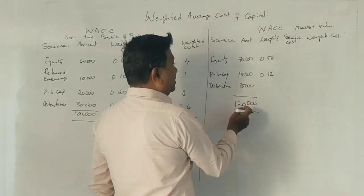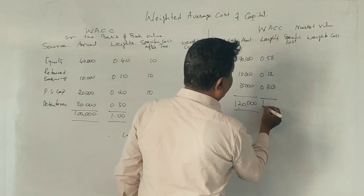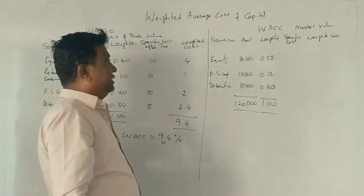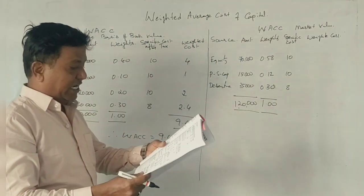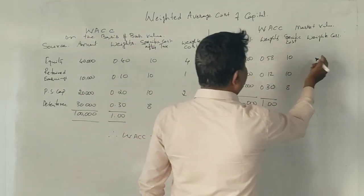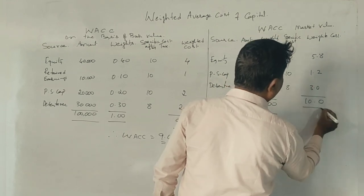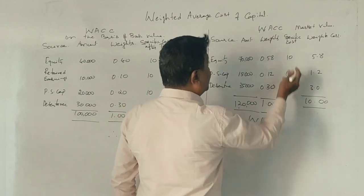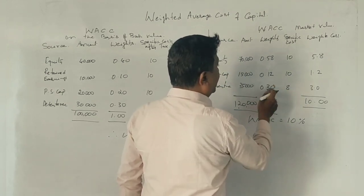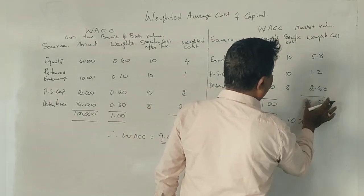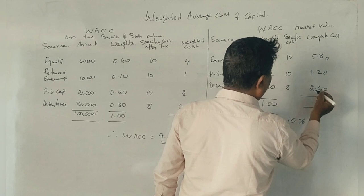The remaining weight is approximately 0.29. Specific costs remain the same: equity 10%, preference shares 10%, debentures 8%. Weighted products: equity 0.58 × 10 = 5.8%, preference 0.12 × 10 = 1.2%, debentures 0.29 × 8 = approximately 2.4%. So weighted average cost of capital as per market value is approximately 9.4%.